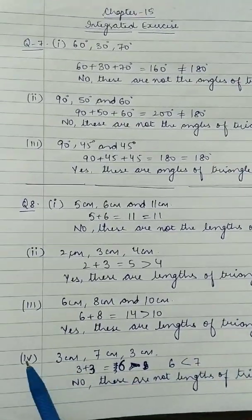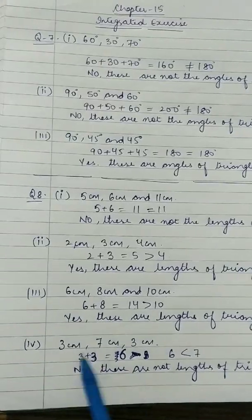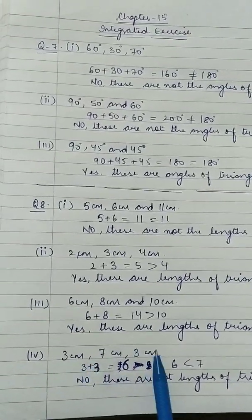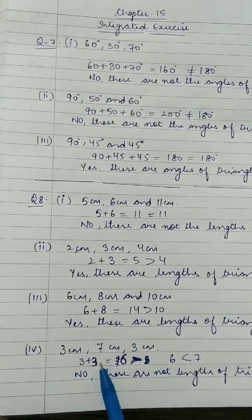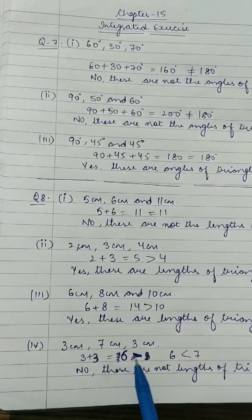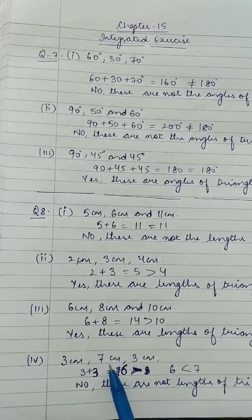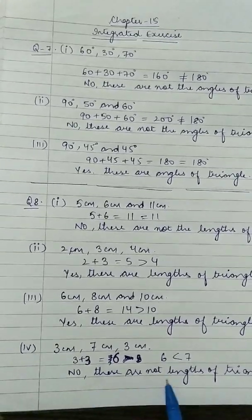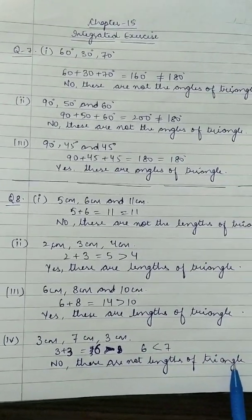Fourth part: 3, 7, and 3 — take any two sides: 3 plus 3 equals 6, which is less than the third side 7. So no, these are not the lengths of a triangle.